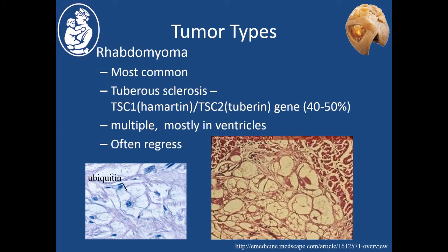There are only two or three types of tumors that are particularly common in children. The most common is a rhabdomyoma, associated with tuberous sclerosis probably more than half the time, related to mutations in the TSC1 or Hamartin or the TSC2/tuberin genes. These tumors are mostly multiple, although they can occur as single large tumors. They mostly involve the ventricles, though they can also involve the atria, and they often regress spontaneously.